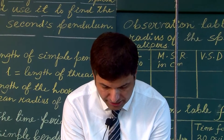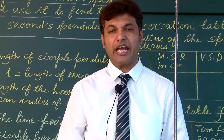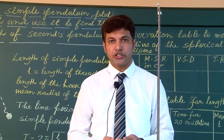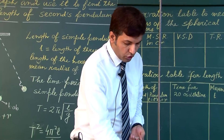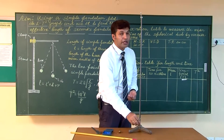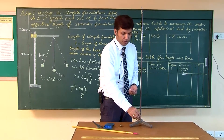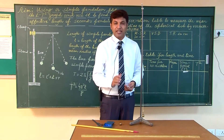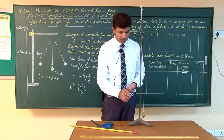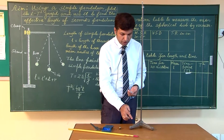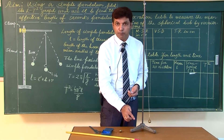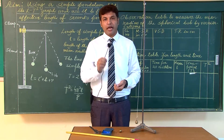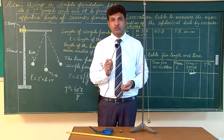We have to measure the time period of the pendulum — the time to complete one oscillation. One oscillation means if the pendulum starts oscillating from the mean position, it goes to the other end and comes back to the same point. When it comes back to the same point the time elapsed is called the time period. Time period is the time required to complete one oscillation.